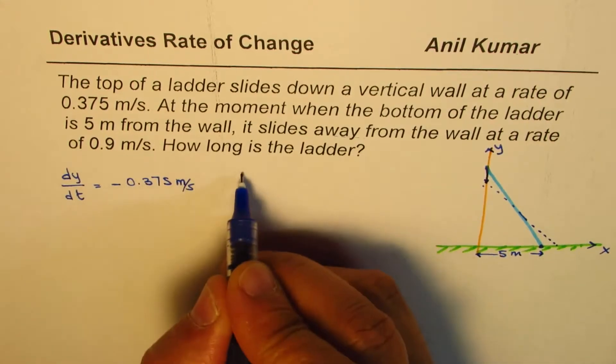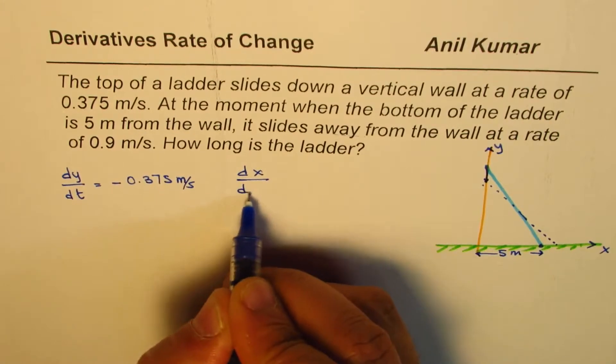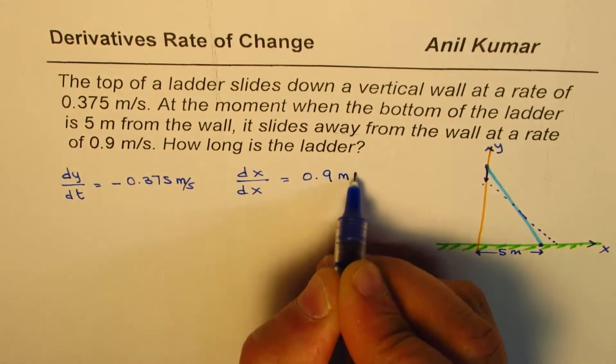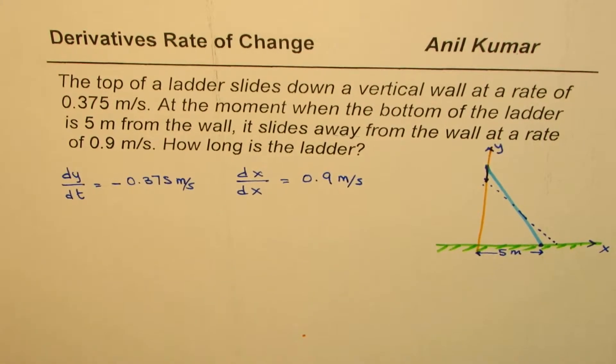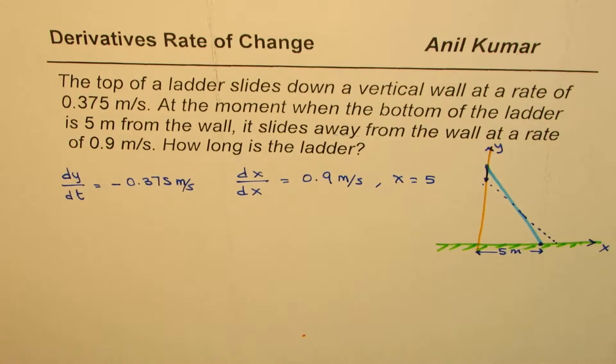At a rate of 0.9 meters per second. And in this direction we are taking x, we'll write change in x with time as 0.9 meters per second. Does it make sense to you? And at this instance x equals 5.